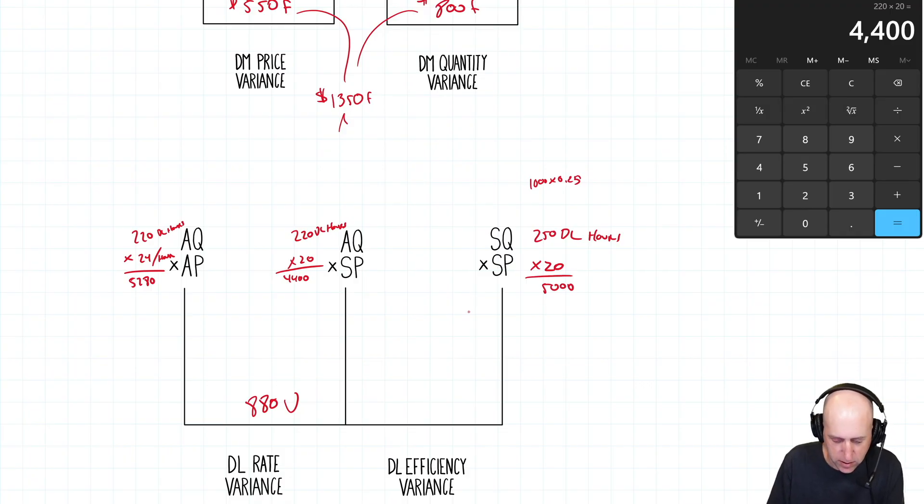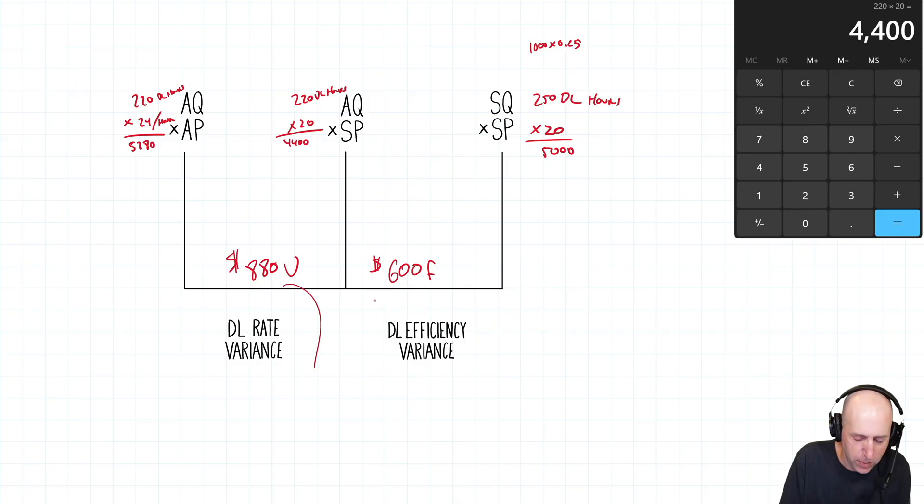And we'll compare the two. 5,000 to 4,400, it's 600 different. So let's remember what we do. We compare what's different. The 20 and the 20 are the same. 250 labor hours, that's my quantity, is what it should have taken. It only took 220. This is favorable. It took me less time than what I would have guessed. So it's a favorable efficiency variance. Overall, it's a mixed bag. It cost us more. We paid higher wages, but we did save money by being more efficient. 880 unfavorable, 600 favorable. Just combine them, and we end up 280 unfavorable.